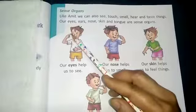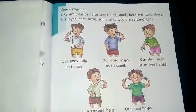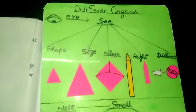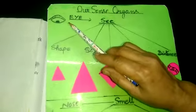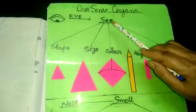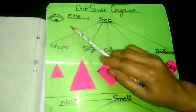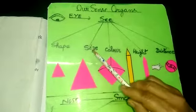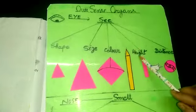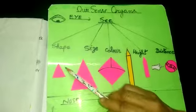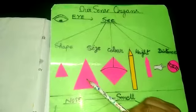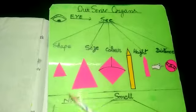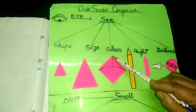Our eyes help us to see. आँखें हमें देखना बताती हैं. In this chart, you see the eye. Eye is the most important part of our body. Eyes help us to see so many things such as shape, size, color, height and distance. For example, shape — the shape is triangle. Size — this triangle is bigger than this one. Color — the color is pink.